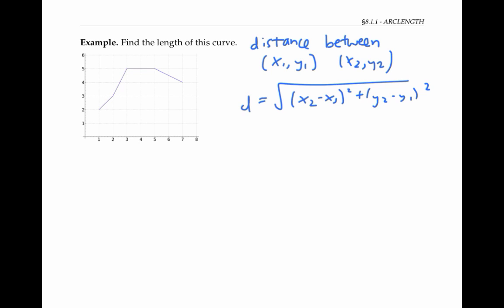Applying this formula to the first line segment, connecting the points (1, 2) and (2, 3), we get a length of the square root of (2 minus 1) squared plus (3 minus 2) squared, which is the square root of 2.